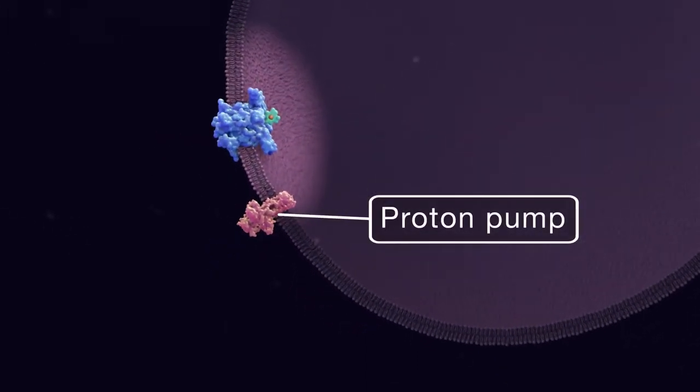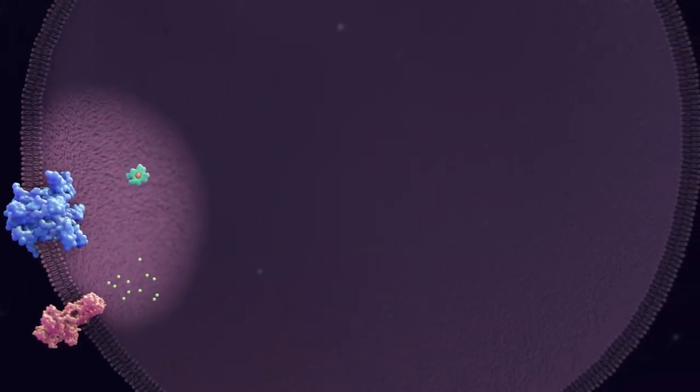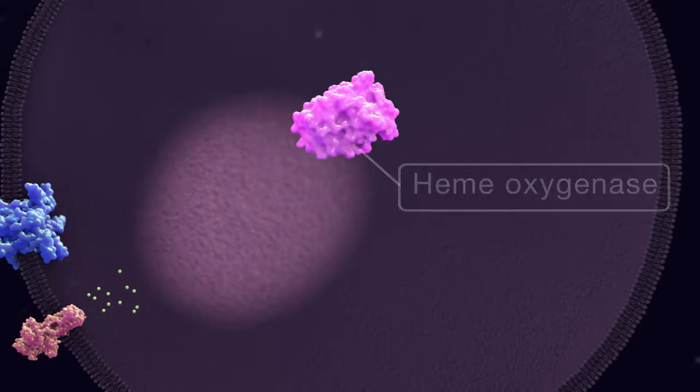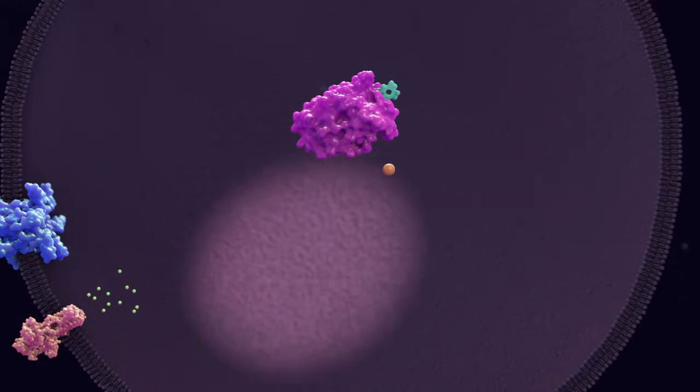Protons are pumped into the fused endosomal vesicle and the heme is released from its receptor as the vesicle becomes acidic. Heme oxygenase within the endosome catalyzes the removal of iron from heme.